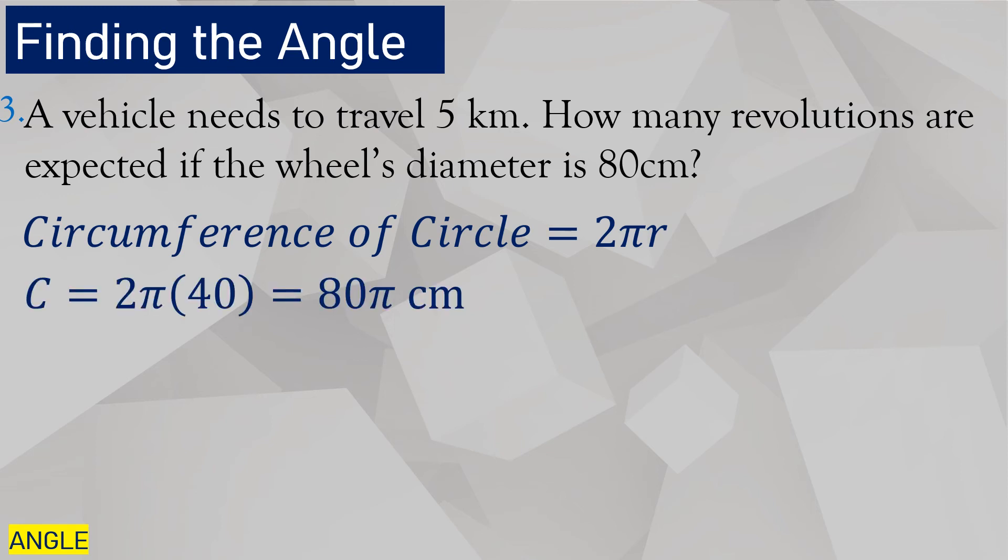We are referring to the wheel in this case. The circumference of the wheel is equal to 2 pi times 40. Where did this 40 come from? Because 80 centimeters is the diameter. Half of it is the radius. So 2 times 40 times pi is 80 pi centimeters.